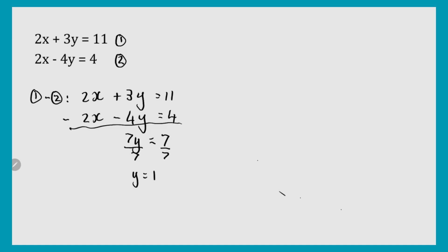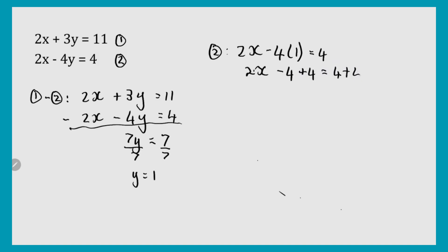Now to get the y on its own, you need to divide both sides by 7, which gives you y equals 1. To find the x value, you can substitute y equals 1 into equation 1 or equation 2 — it doesn't matter, you'll get the same answer. Let's say you chose the second equation: 2x minus 4 times 1 equals 4, so 2x minus 4. Adding 4 to both sides gives 2x equals 8. Dividing by 2, x equals 4. You can go back and substitute to double check.